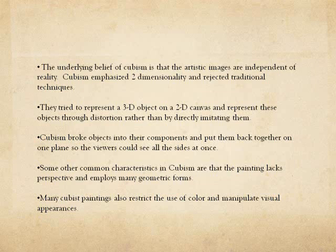Cubism broke objects into their components and put them back together on one plane so viewers could see all sides at once. Cubists rejected their prior belief that art should copy nature. Cubism sought to differentiate forms and accommodate shifting sources of light. Common characteristics include paintings that lack perspective and employ many geometric forms, restrict the use of color, and manipulate visual appearances. Cubism rejected the 500-year-old idea that painting was like a window, and Cubist art has more conceptual and subjective paintings that sought to represent the underlying structure of existence.